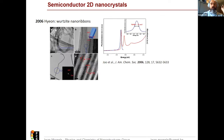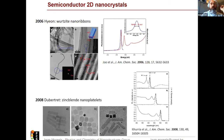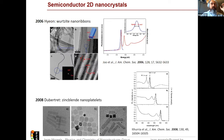Many developments followed thereafter, and another very important milestone was the years 2006 and 2008, when the groups of Hian and Dubertret showed that rods are not the only shape you can make. They demonstrated that you can also make two-dimensional nanocrystals. This gave a very strong boost to the field, because for the first time, the fluorescence became very, very narrow — to the point where it's only influenced by thermal broadening. This is because we now have monodisperse nanocrystals, uniform in thickness across the ensemble. The talk of Andreas Riedinger today will show a little bit more of what we can do with these nanoparticles.